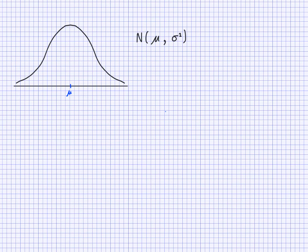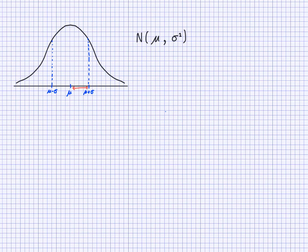So if I mark mean plus one standard deviation here, and roughly mean minus one standard deviation here, this section would contain approximately 68% of all the data. That means each half — the part I marked in red — would be around 34%, and the other side another 34%, giving 68% within one standard deviation of the mean.